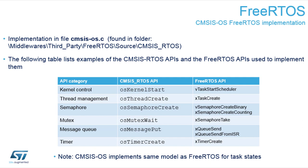Now we can see the implementation in the CMSIS OS .c file. You can see examples of the differences between the native API of FreeRTOS and the CMSIS RTOS counterpart. One big advantage of the CMSIS RTOS is that it's more readable. For example: kernel start maps to task start scheduler, thread create maps to xTaskCreate, semaphore create can be xSemaphoreCreateBinary or counting. The CMSIS RTOS always begins with 'OS' followed by the description of the function, which is very nicely readable.